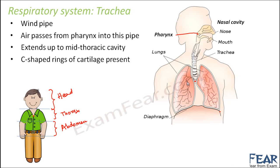C-shaped rings of cartilage are present to provide support to the trachea. These cartilage rings help prevent the trachea from collapsing even when there is no air inside. The trachea should not behave like an elastic structure that collapses when empty, so the cartilaginous rings keep it stout and maintain its shape regardless of whether air is present.